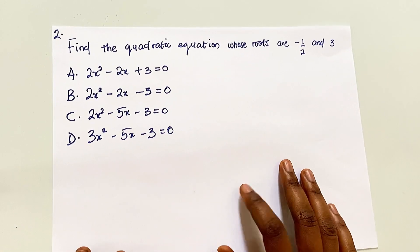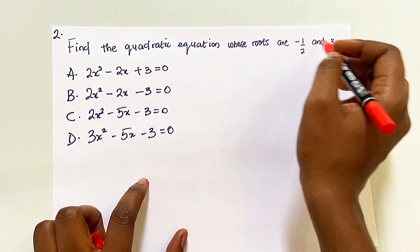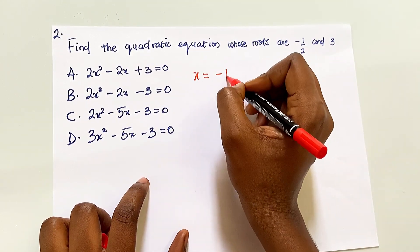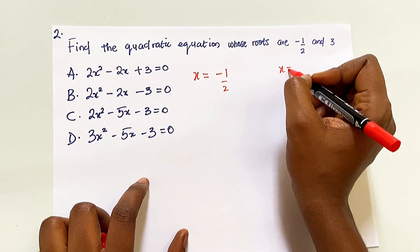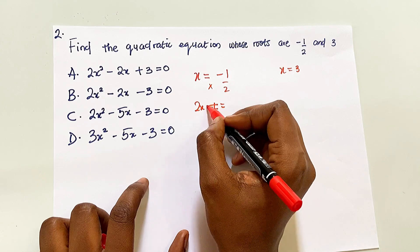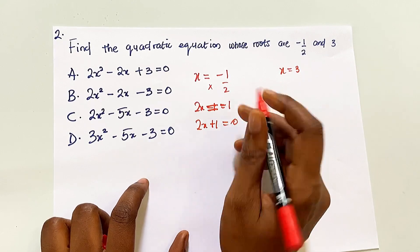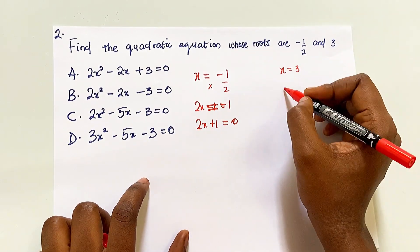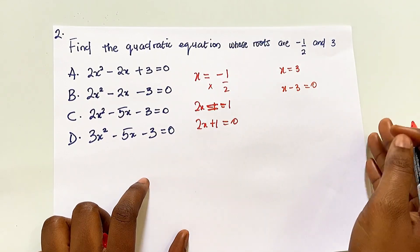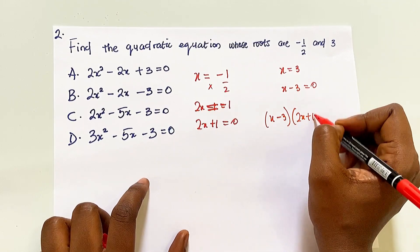Question number 2 is quite similar to the first. This time let's use the other method where we set x equal to each root. It says: find the quadratic equation whose roots are -1/2 and 3. So x = -1/2 and x = 3. Cross-multiplying the first: 2x = -1, so 2x + 1 = 0. For the second: x - 3 = 0. We multiply the two expressions and equate to 0: (x - 3)(2x + 1) = 0.